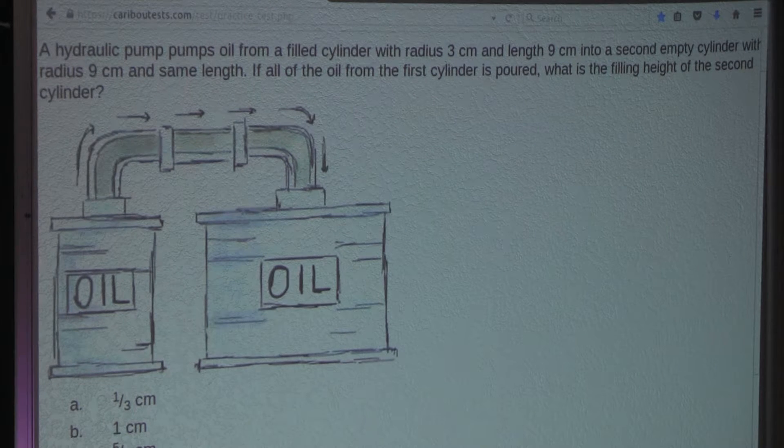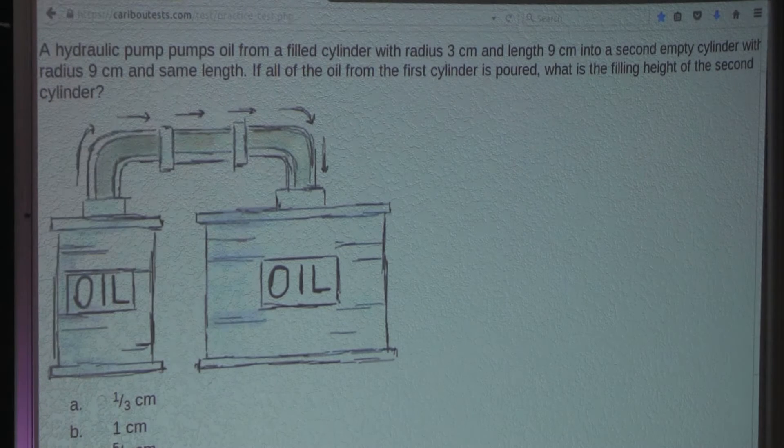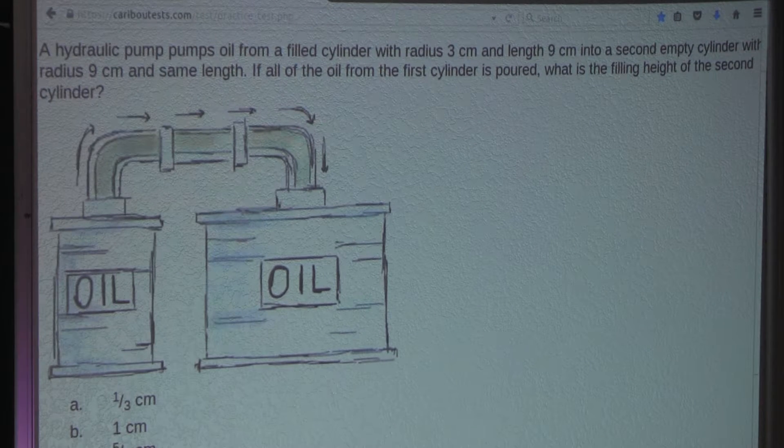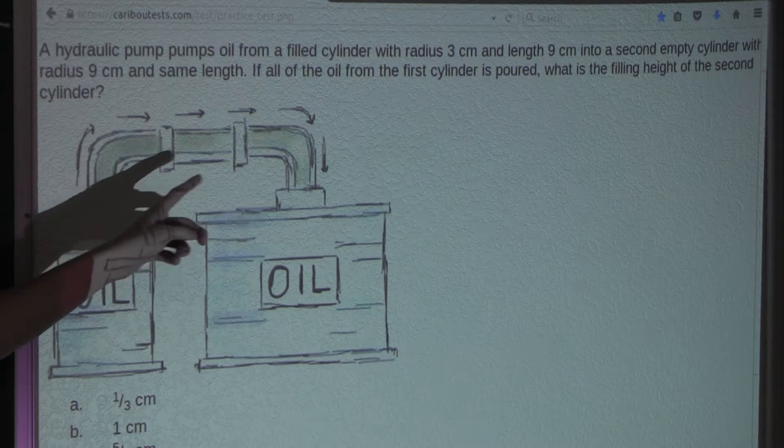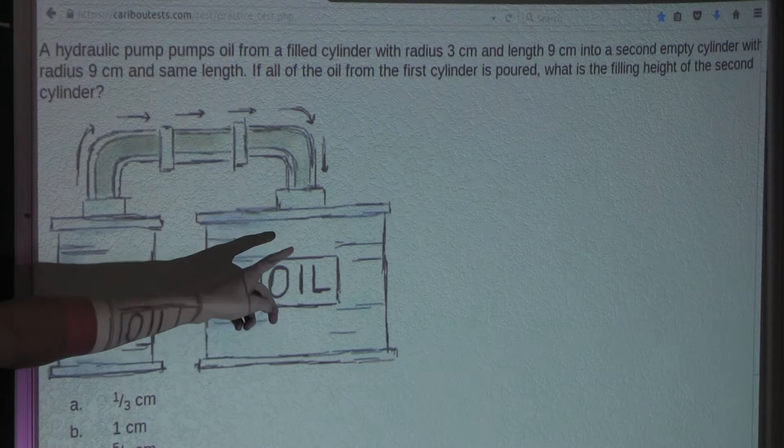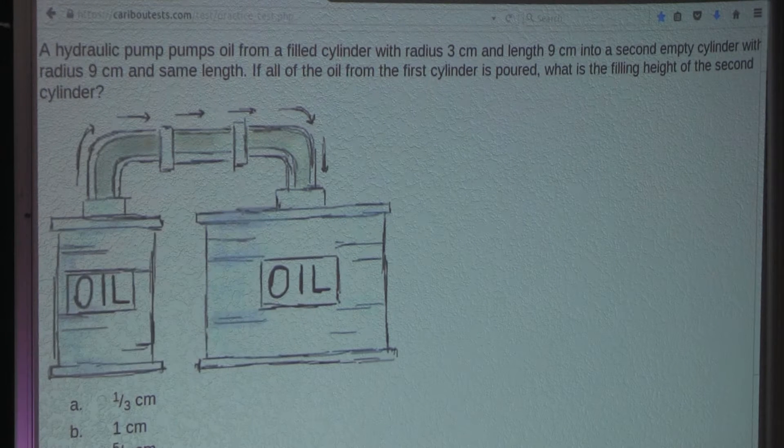Alright, so now the question says that a hydraulic pump pumps oil, and we know that oil is a liquid. So therefore, when all of the oil is pumped from this cylinder to this cylinder, the volume must be the exact same because liquid is not compressed.